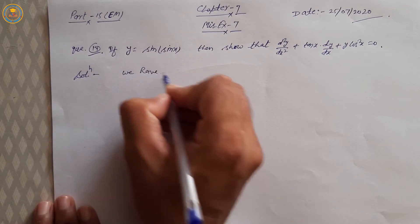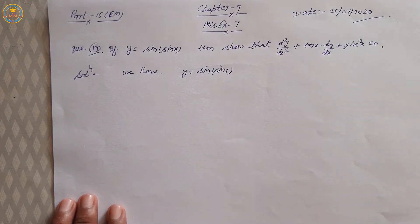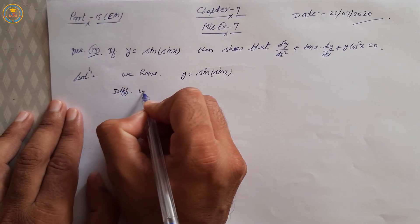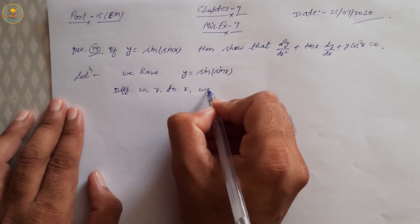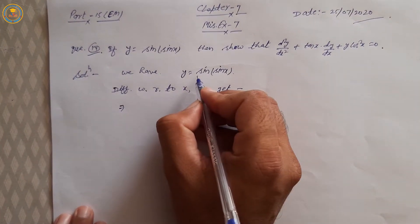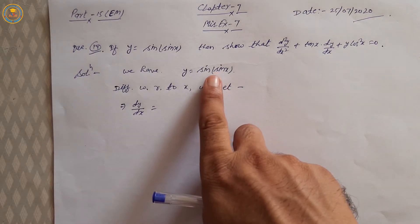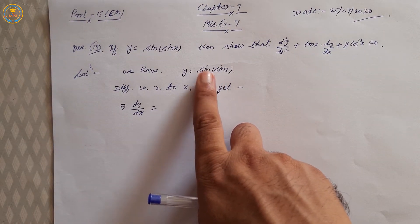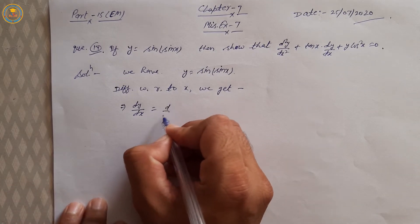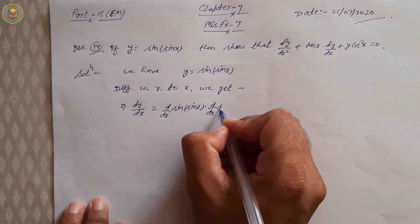Solution. We have y = sin(sin x). Now differentiate with respect to x. We get dy/dx. Differentiate using the chain rule: first differentiate sin(sin x), then differentiate sin x. So d/dx of sin(sin x) times d/dx of sin x.